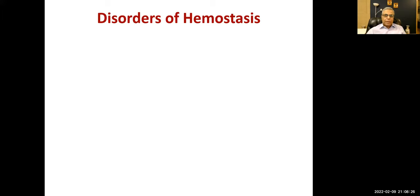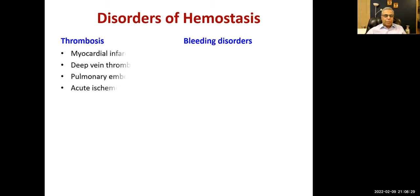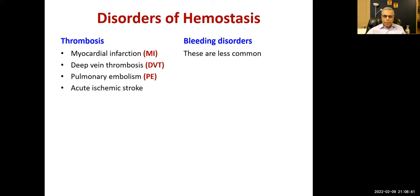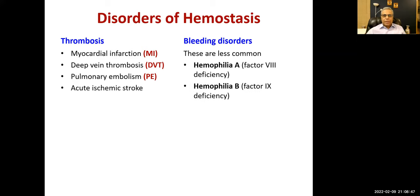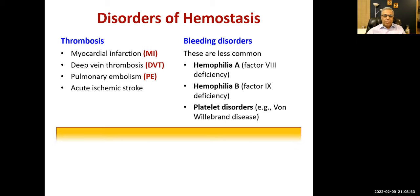We do get disorders of hemostasis. For example, thrombosis — we get diseases like myocardial infarction, deep vein thrombosis, pulmonary embolism, and acute ischemic stroke — all are pretty dangerous. Bleeding disorders are less common, like hemophilia A (factor 8 deficiency) and hemophilia B (factor 9 deficiency), and platelet disorders like von Willebrand disease.